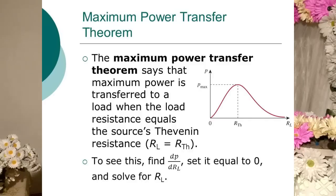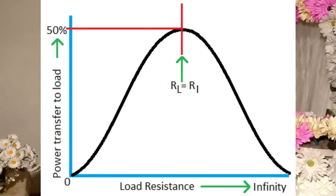We have to use maximum power transfer theory. If we use maximum power transfer theory, we use the same method — if you apply the amplifier for the impedance, it will be low.